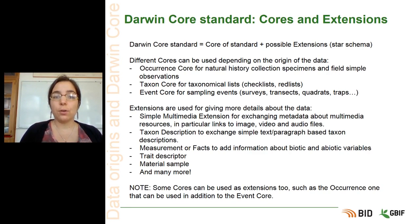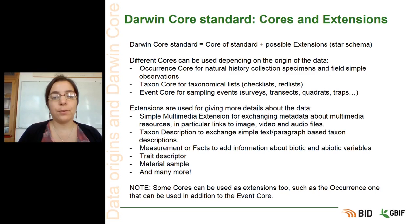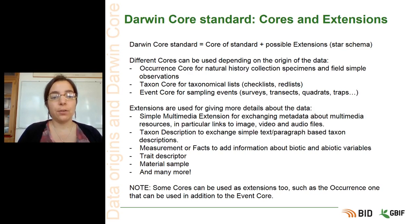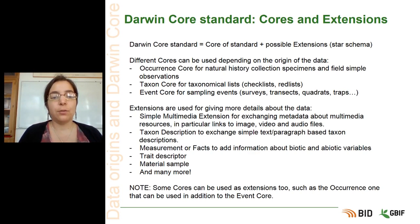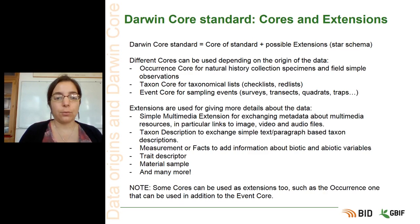Different cores can be used depending on the origin of the data. You can use the occurrence core for natural history collection specimens and field observations, or the taxon core for taxonomical lists such as checklists or red lists. The event core is for sampling events such as surveys, transects, quadrants, traps, and every protocol used to sample data in the field.